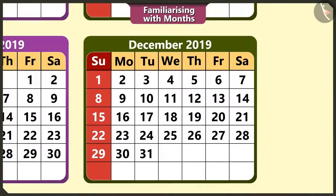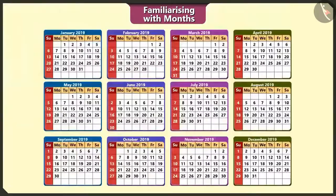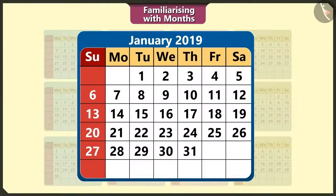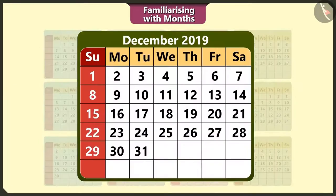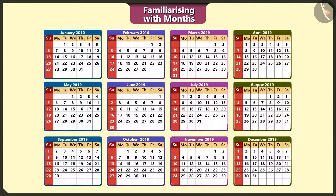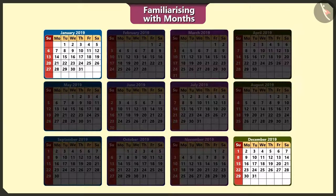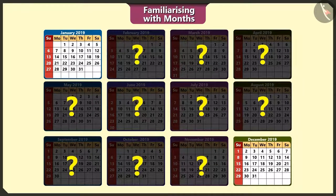The first day of the year always starts with the 1st of January and the last day is the 31st of December. The first month is January and the last month is December. What are the months between these two months?